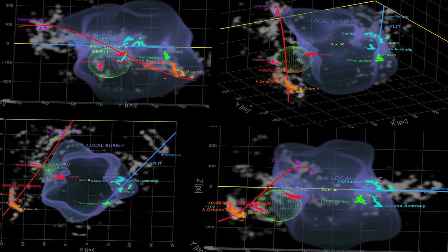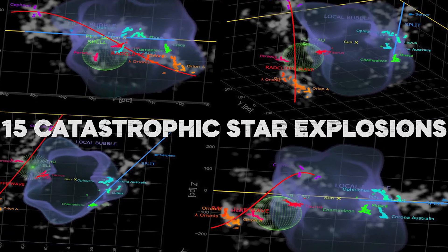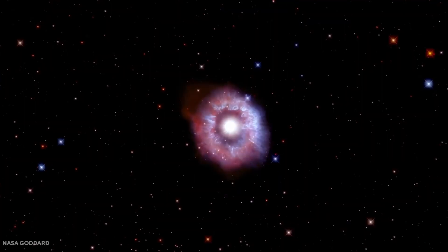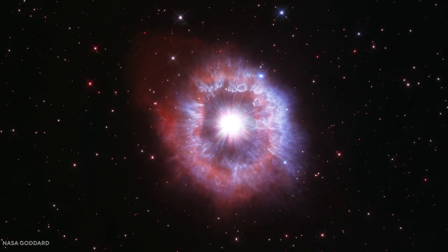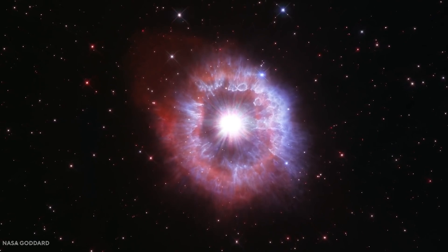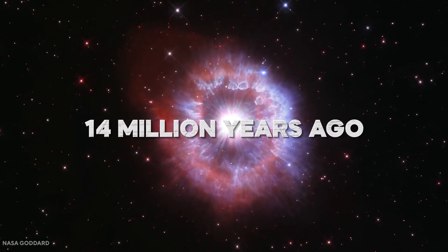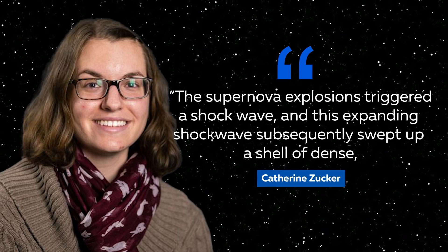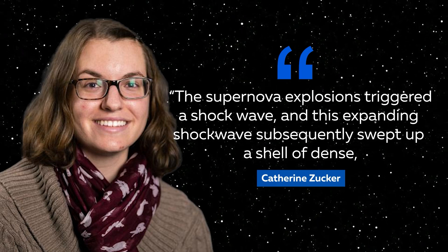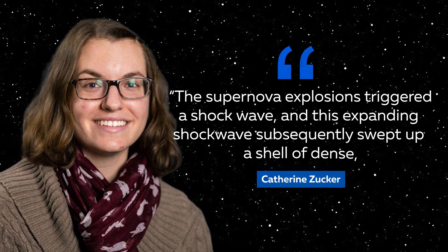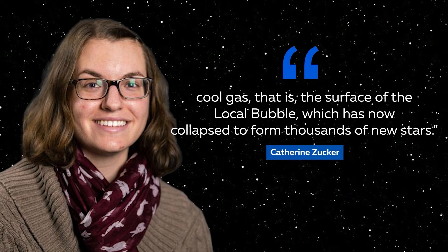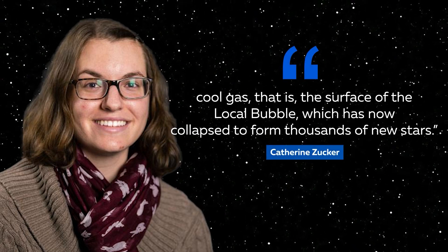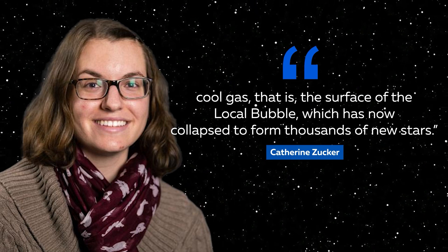The researchers found that a series of about 15 catastrophic star explosions, also known as supernovae, likely began taking place near the local bubble's center about 14 million years ago. Catherine Zucker goes on to answer the question of the bubble's formation, saying the supernova explosions triggered a shockwave, and this expanding shockwave subsequently swept up a shell of dense, cool gas, that is, the surface of the local bubble, which has now collapsed to form thousands of new stars.